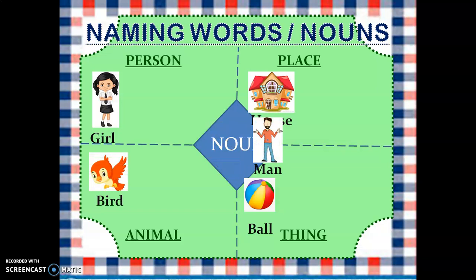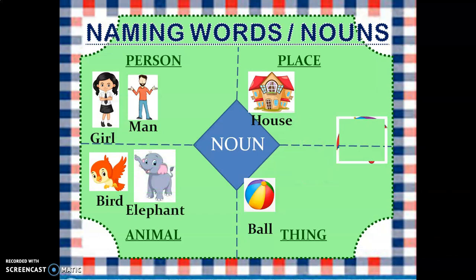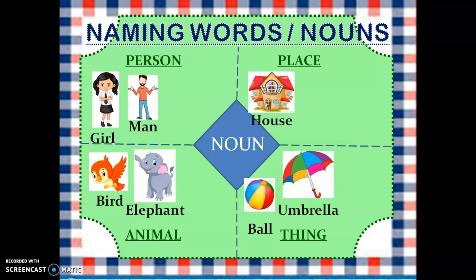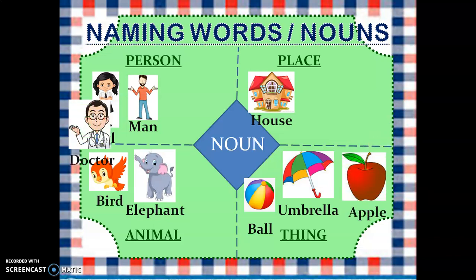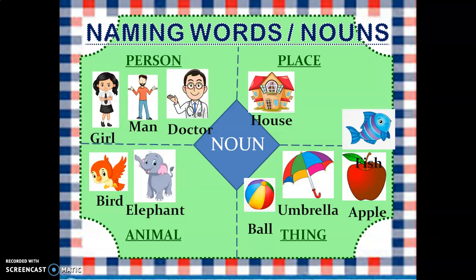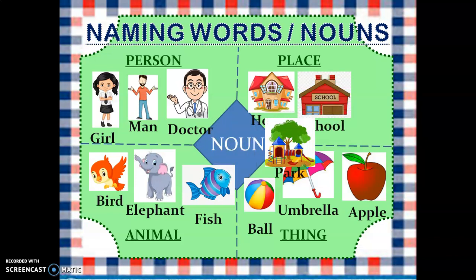That's a man and it will go to the person column. That's a fish and it will go to column animal. An elephant — it will go to column animal. An umbrella — it will go to column thing. That's an apple and it will go to column thing. A doctor — it will go to column person. That's a fish and it will go to column animal. That's a school and it will go to column place. The last one — that's a park and again it will go to column place.